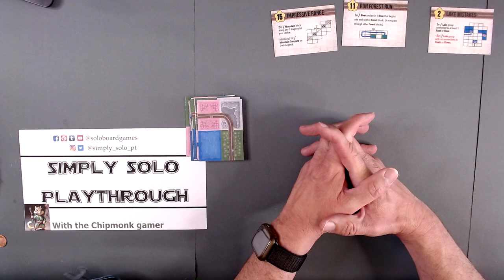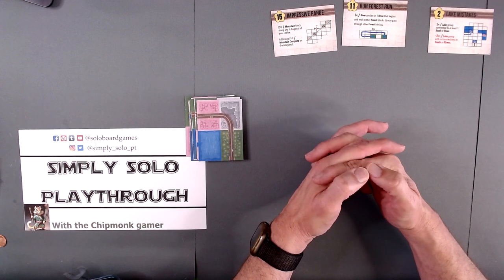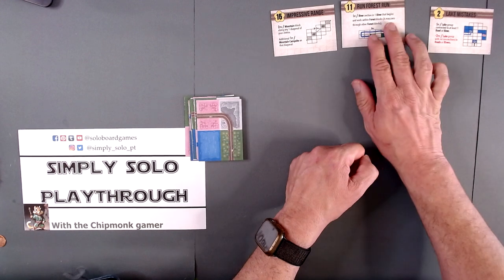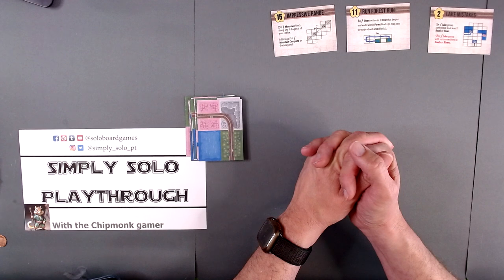One point River: a river that begins and ends with forest blocks that may pass through other forest blocks. That's nice, this is one of my favorite ones.